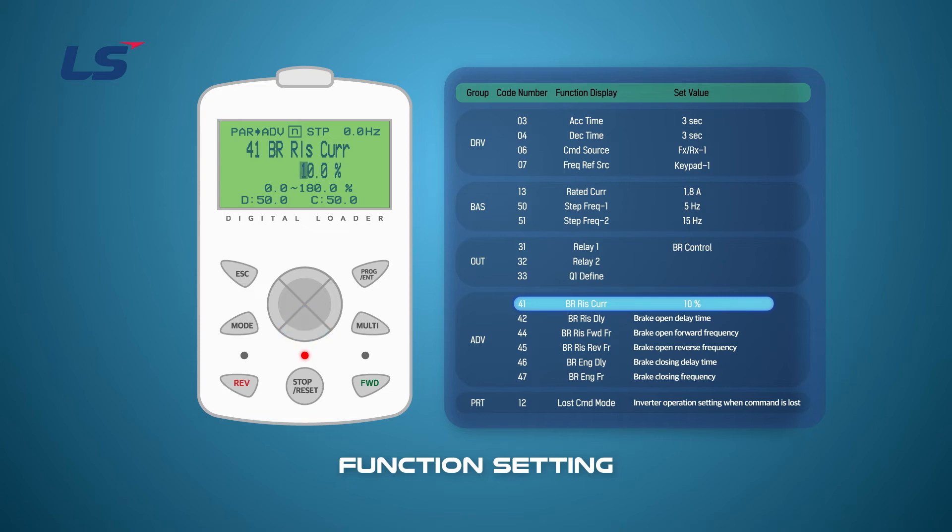The open current of BR control will be set to 10% of the motor rating. Since the rated current is 1.8 amps, it becomes an open current condition when it becomes 0.18 amps.